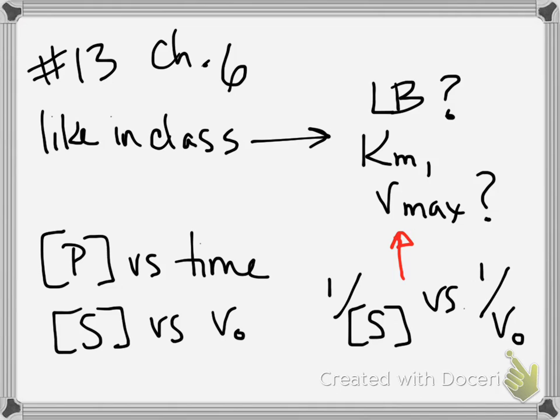So that's the purpose of the LB plot is it lets your data form a straight line so that your intercepts will inform you of what your numbers are for your KM and your Vmax. And your KM and Vmax are going to be particular to that enzyme and that reaction. So they're like characteristics.